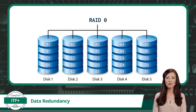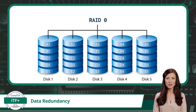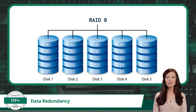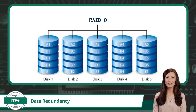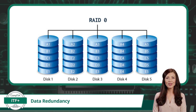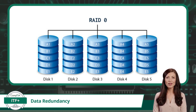RAID 0, for instance, prioritizes speed and speed alone. In this setup, data is striped across two or more disks, where striped refers to the method of dividing up and distributing data across multiple hard drives, or each block of data is sequentially written to each disk in the array. RAID 0, however, does not offer redundancy. Worse, if one disk fails, all data is compromised.